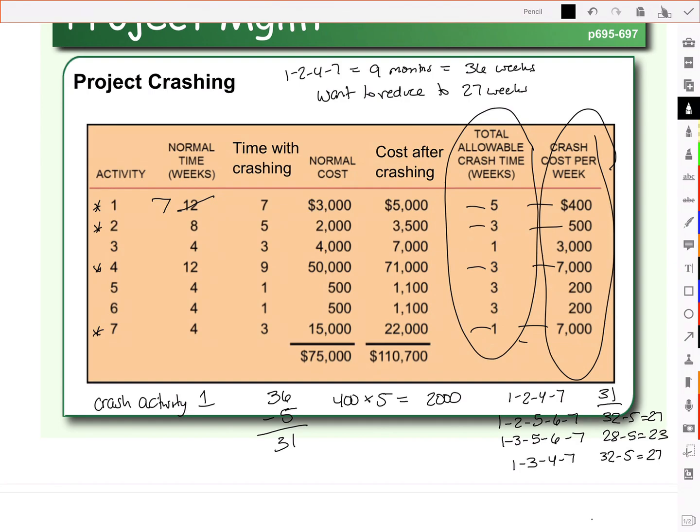We're not there yet. So now we've got to figure out the next thing to crash. So as you look at your crash cost per week, we've gone with the cheapest one. So now we pick the next cheapest. The next cheapest one is activity 2. Its cost per week is 500 bucks. And so we look at how many weeks can we remove from activity 2.